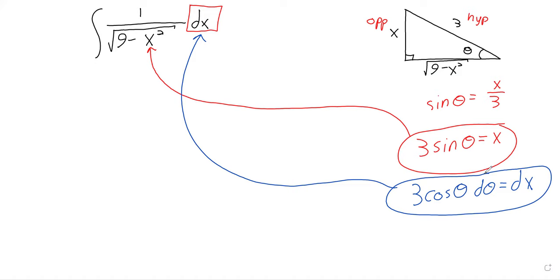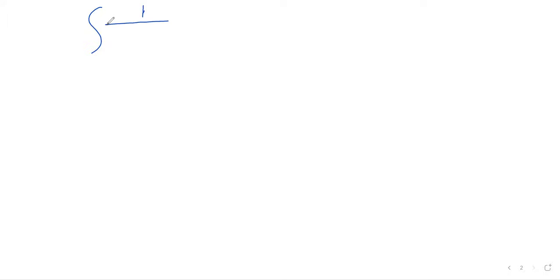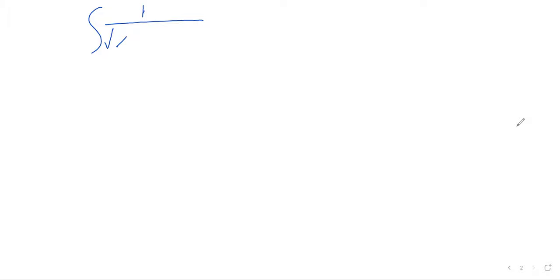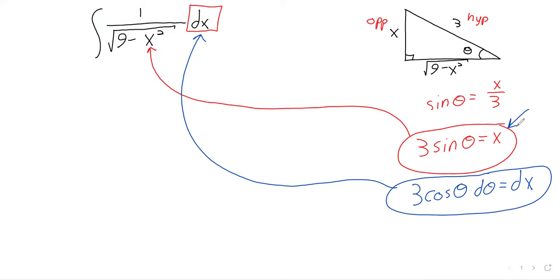These trig substitution problems tend to go on a bit — sorry about that, but there's not really anything that can be done about it. We've got the integral of 1 over the square root of 9 minus x squared, but x is 3 sine theta, so it becomes 9 minus 9 times sine squared theta under the square root, and dx is 3 times the cosine of theta dθ.